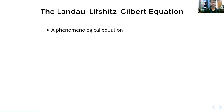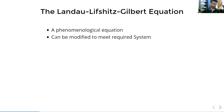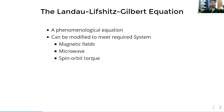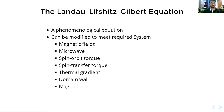Since it is a phenomenological equation, we can modify it to meet our required needs or system. There are many systems — we can make the equation work for magnetic fields or microwave, which is our field. We use microwave in our research. There is also spin orbit torque, spin transfer torque, thermal gradient, domain wall, magnons, skyrmion, and many more.